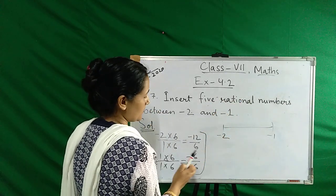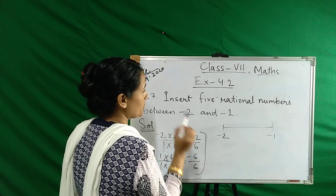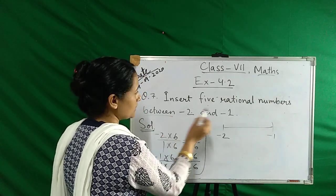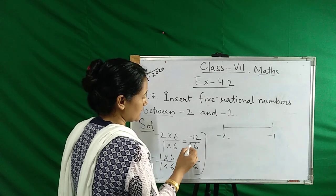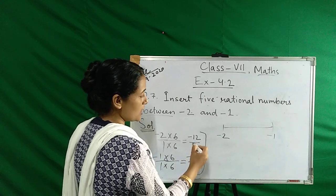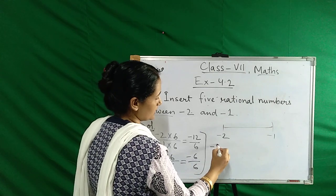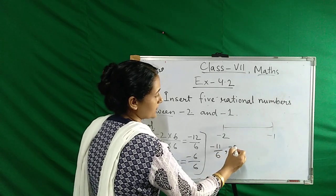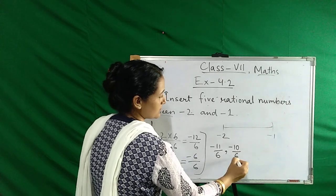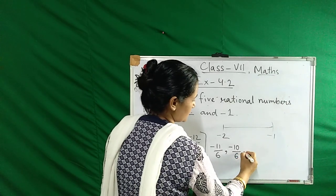This is the answer, but we now need five rational numbers in between. Between means the middle numbers. So minus 12 is here, so we write here minus 11 by 6, minus 10 by 6, minus 9 by 6...